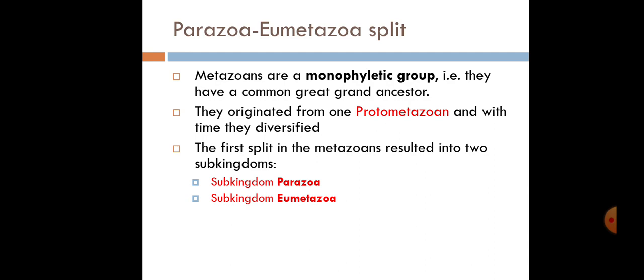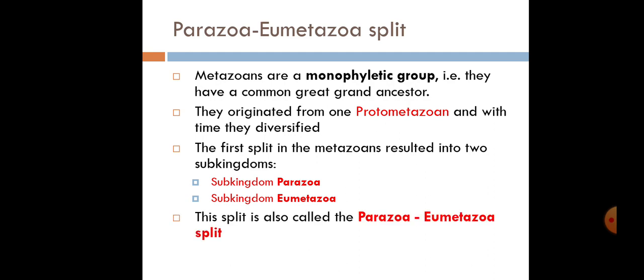The first cells to integrate resulted in two sub-kingdoms: sub-kingdom Parazoa and sub-kingdom Eumetazoa. Eumetazoa are the true animals we see today. Parazoa are animals that don't have tissues. Going back to the slide, you can see that from multicellularity, animals divided into those with true tissues and those without — those without true tissues are called Parazoa. This is called the Parazoa-Eumetazoa split.